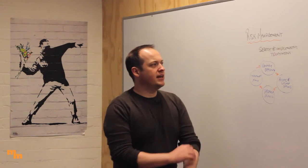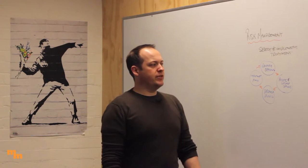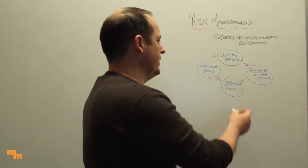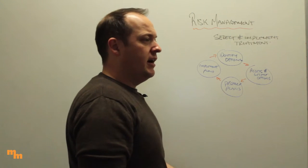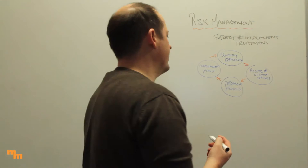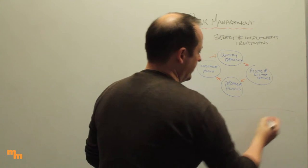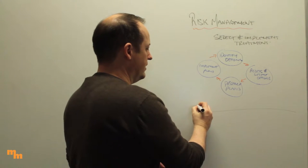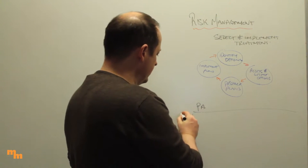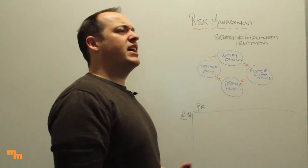Now that we've gone through all those different risks and thought about options for treating them, we need to access and select the options we're going to use, prepare our plans, then implement them. When preparing and implementing the plan, there are a couple of key elements. You can use tables or whatever format you like, but first you need to think about your proposed action — what are we going to do? We know what the risks are, so what is my proposed action to address each one?